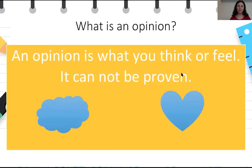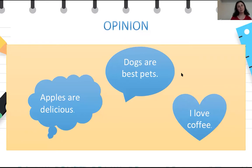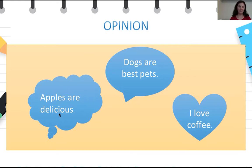Now what is an opinion? An opinion is what you think or feel. It cannot be proven. Here are some examples: apples are delicious. Well, you might think that apples are delicious but someone might not agree with you — they may think that oranges are delicious. So this is a matter of your own judgment and this is an opinion. It's not a fact.